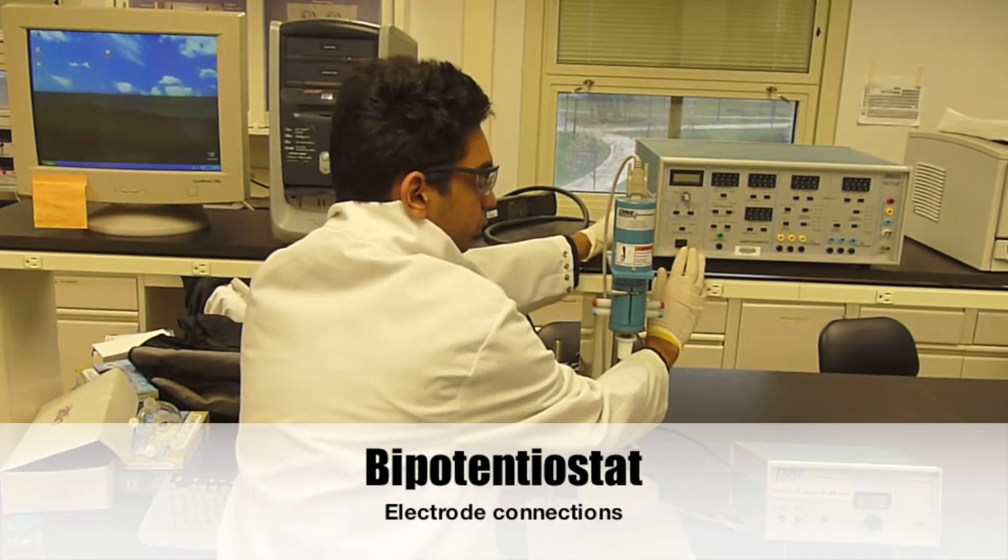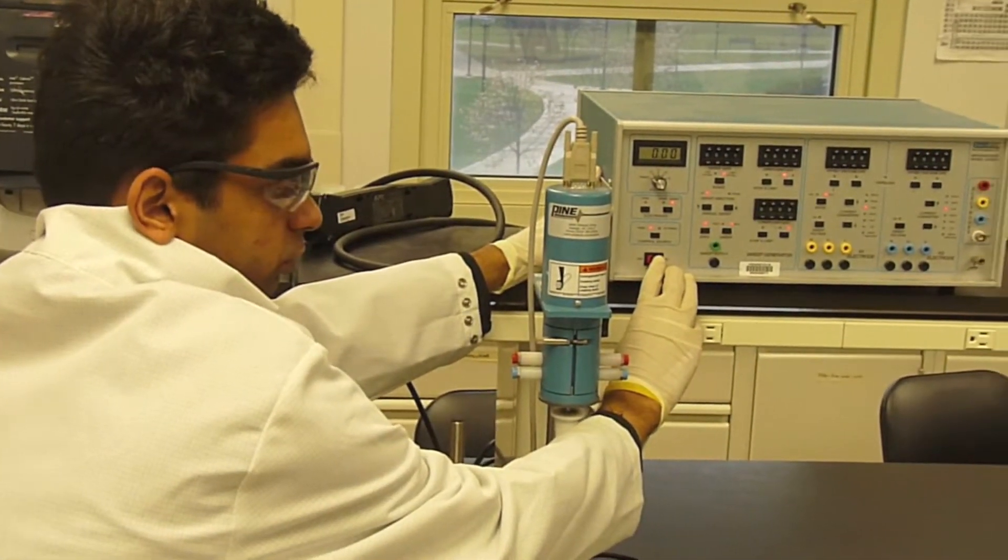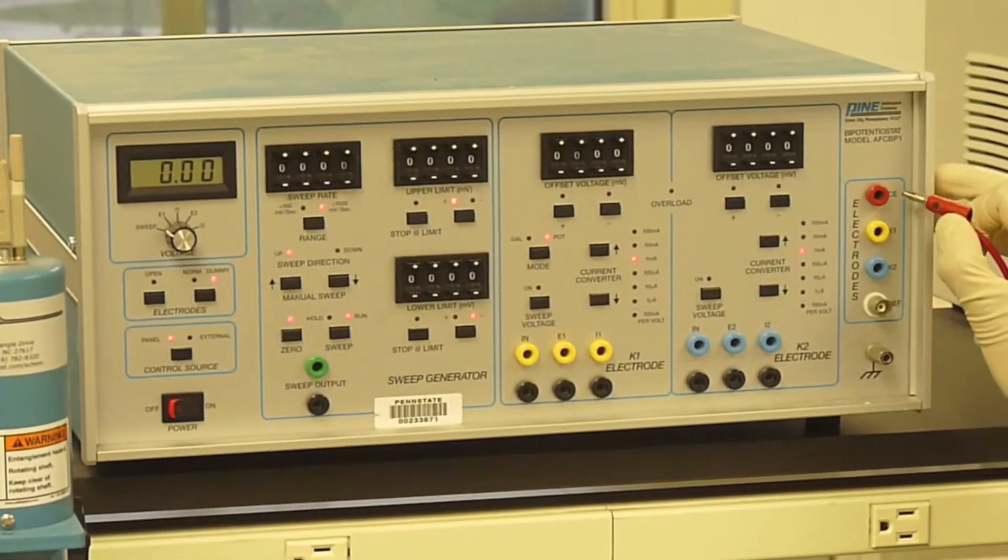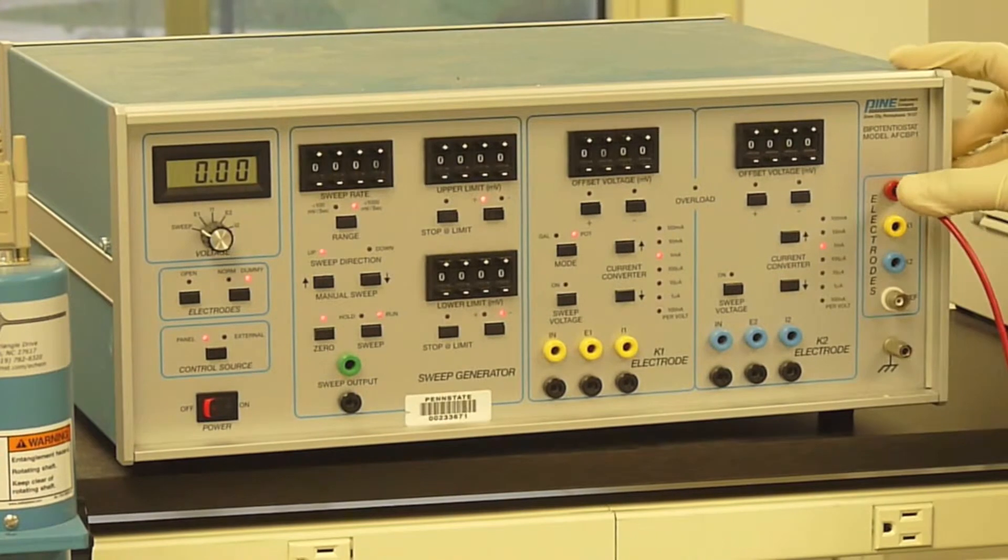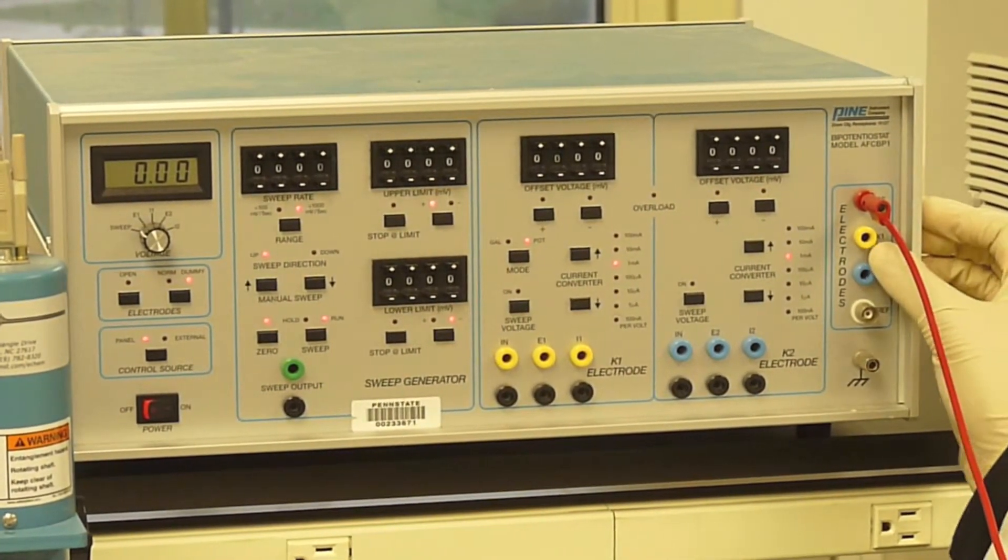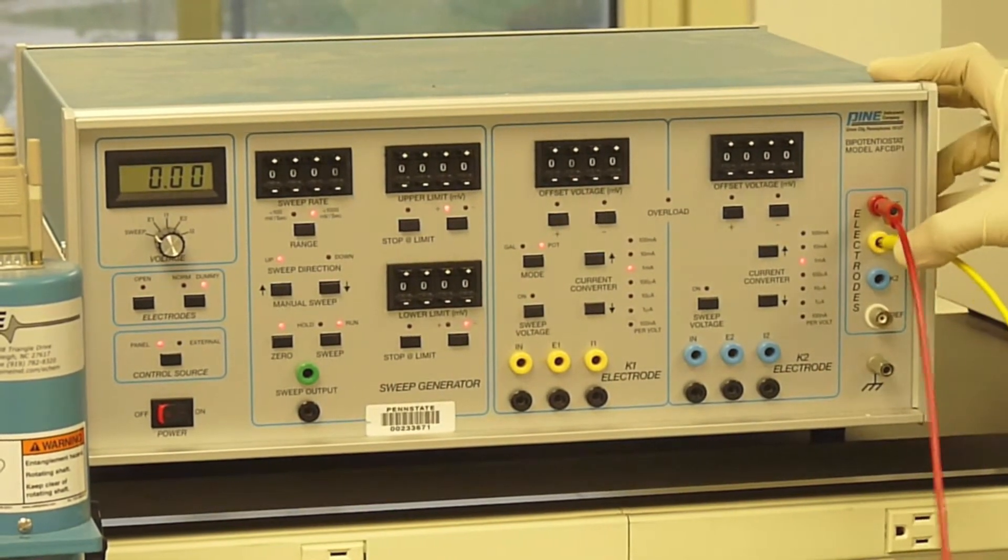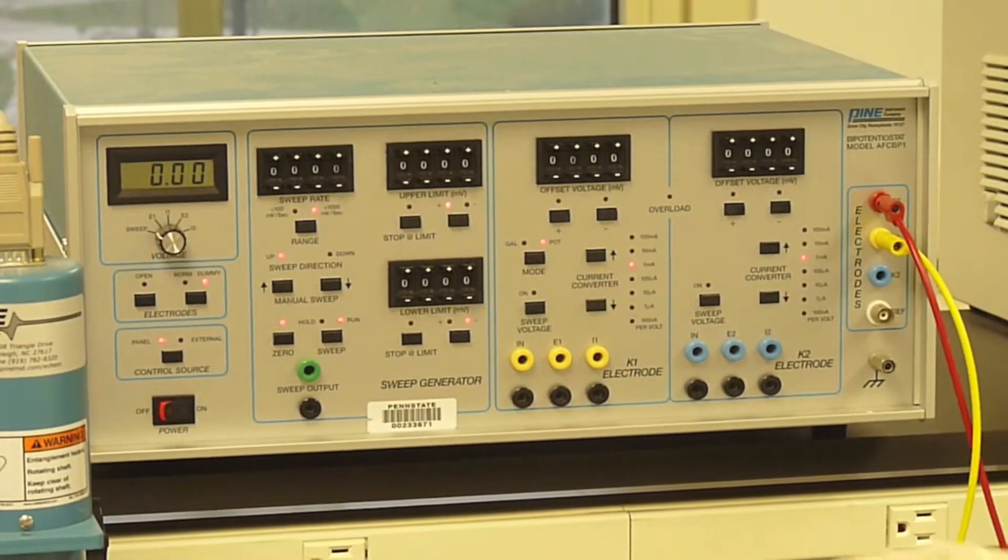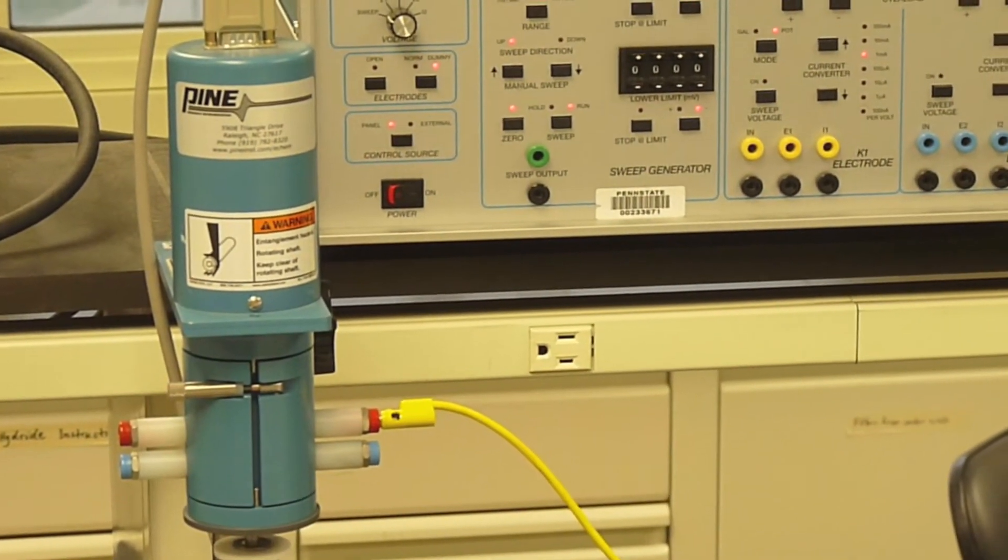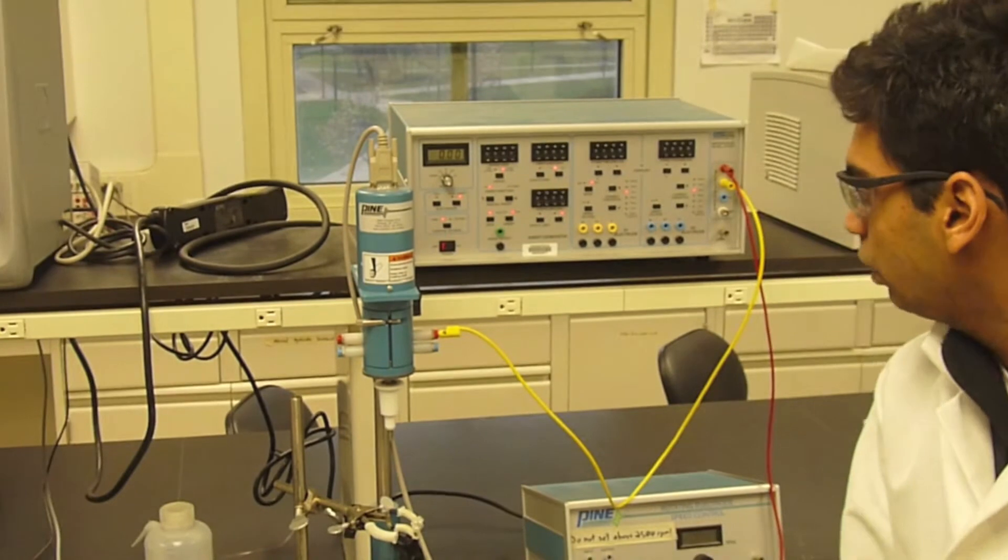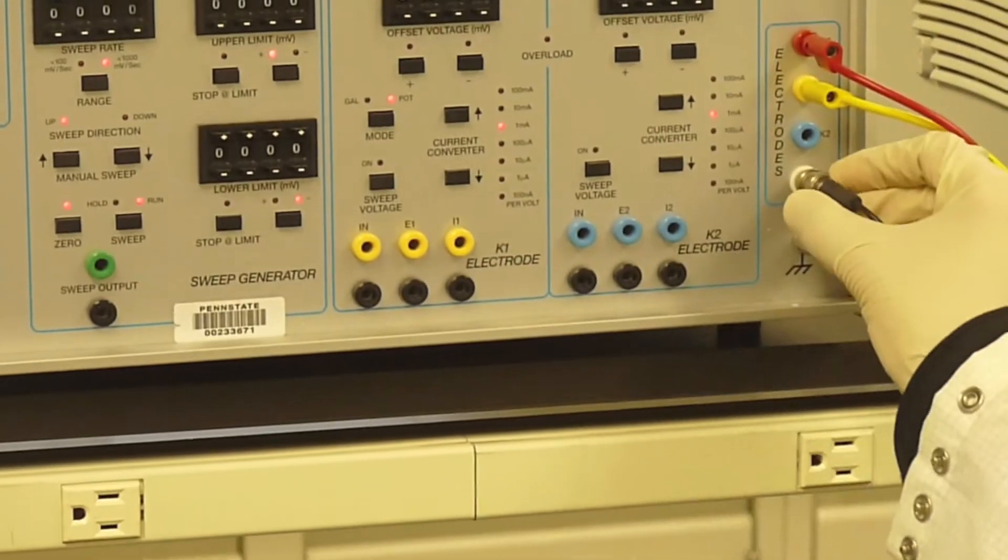To turn on the bipotentiostat, flip the power switch in the lower left corner to the on position. The red counter electrode lead connects to the red CE port. The yellow working electrode lead connects to the yellow K1 port. The other end connects to the red port on the working electrode module. The reference electrode is connected to the bottom socket with a gentle push and turn.